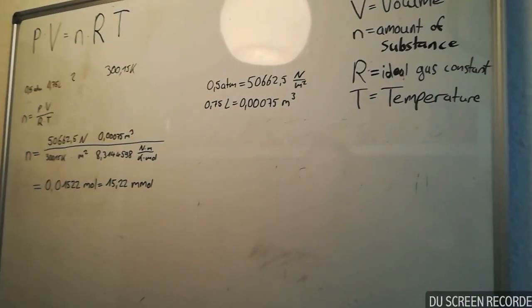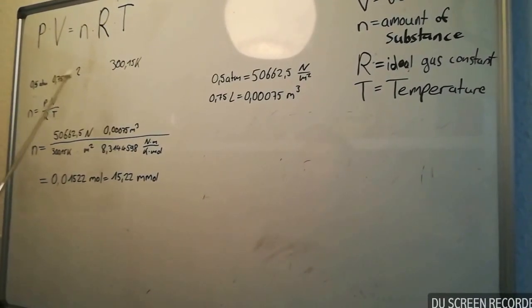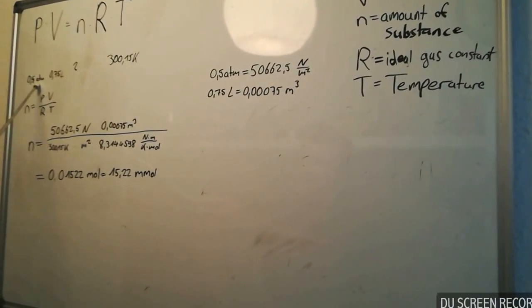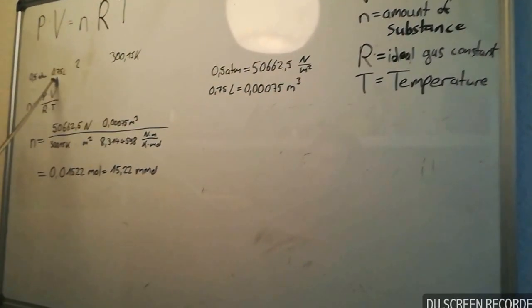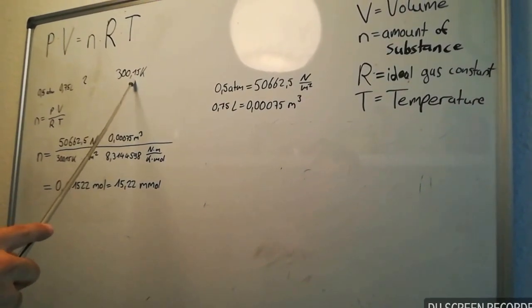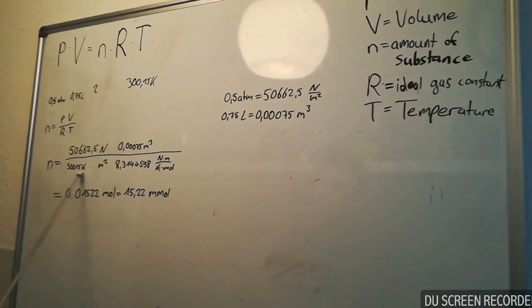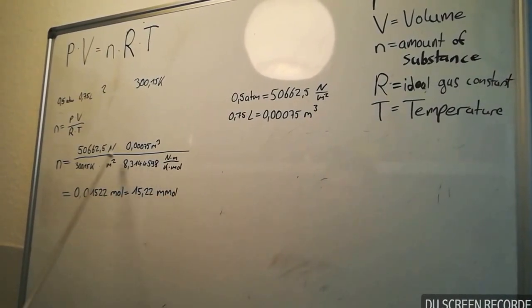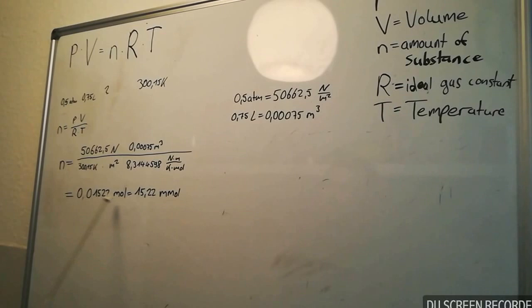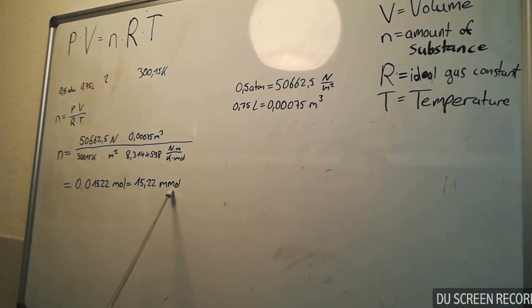And if we put all this in our formula with 0.5 atm's, 0.75 liter and 300.15 kelvin, and multiply it out, we get 15.22 millimole.